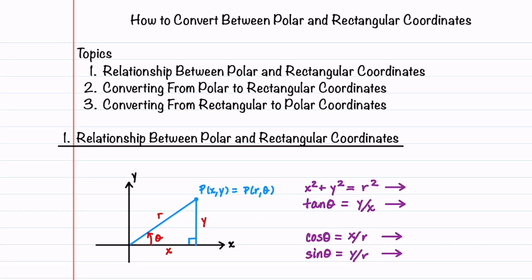Did you know that there are two equations that you can use to convert from polar to rectangular coordinates, and two equations that you can use to convert from rectangular to polar coordinates? I'll tell you all about these equations and walk through some example problems of converting a point from polar to rectangular coordinates and from rectangular to polar coordinates.